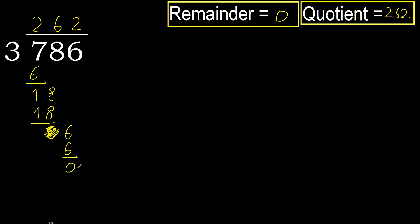Okay, therefore 786 divided by 3 is 262.